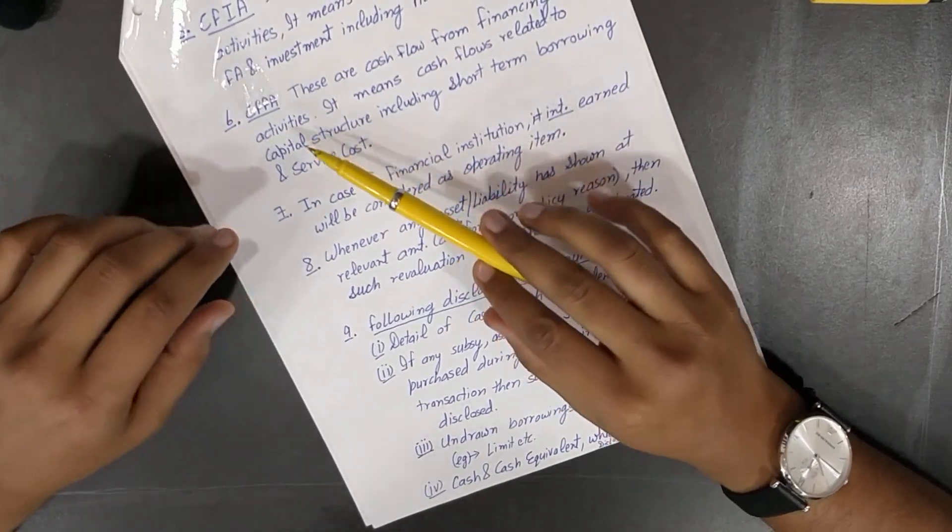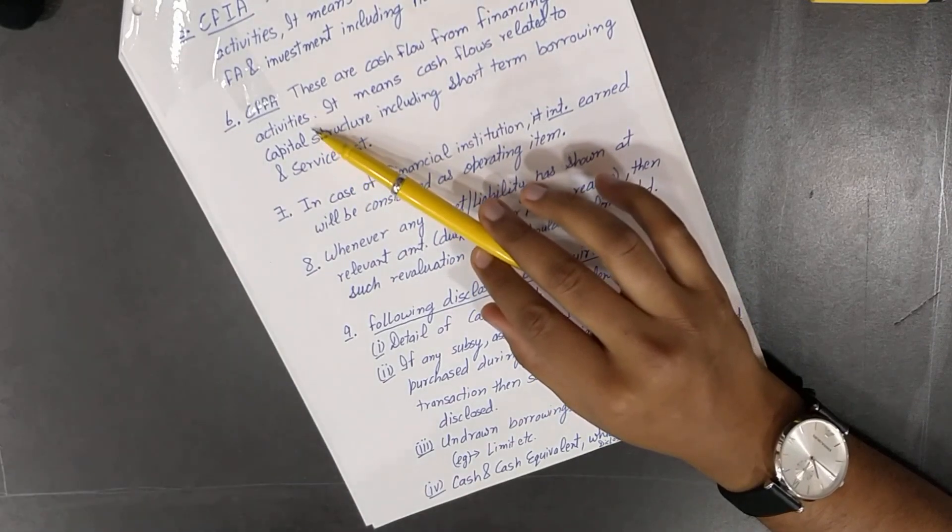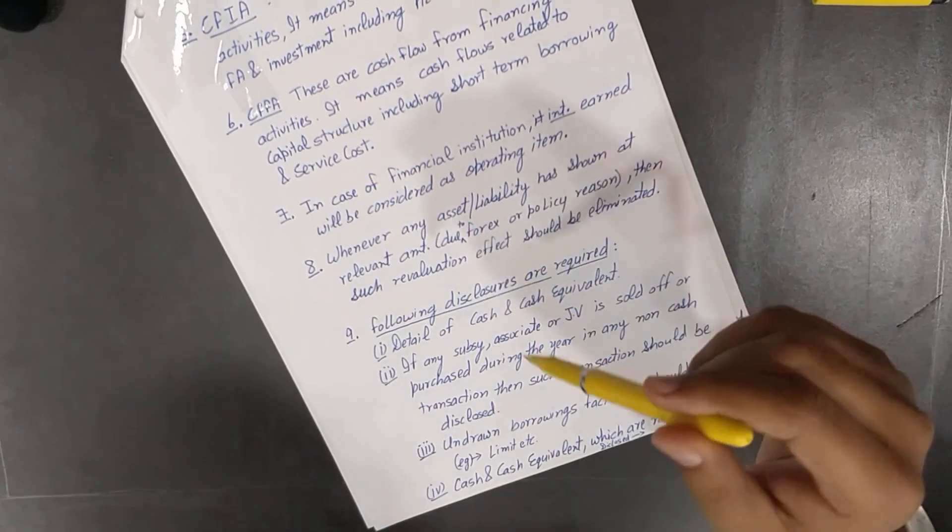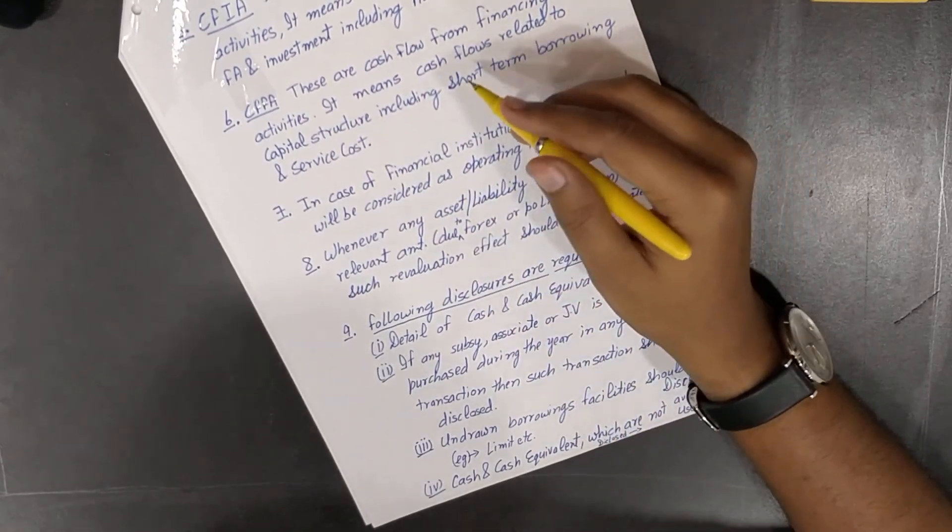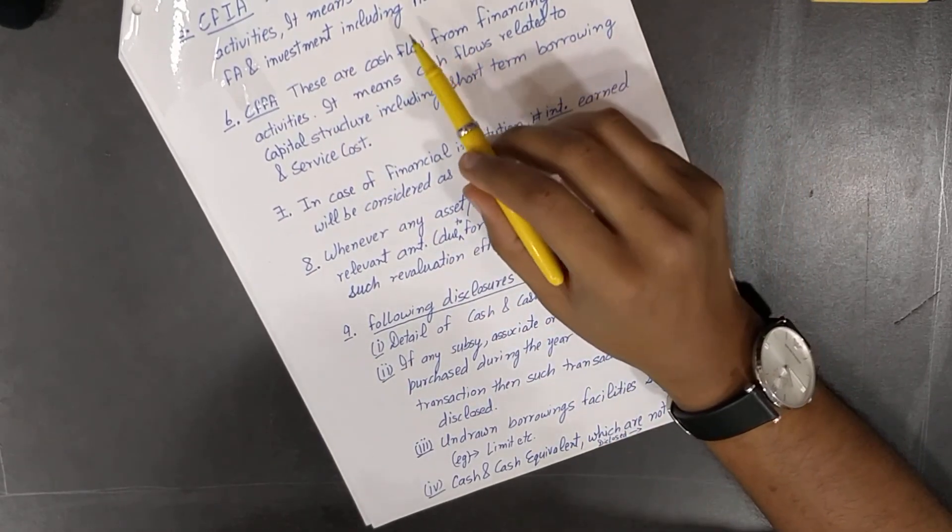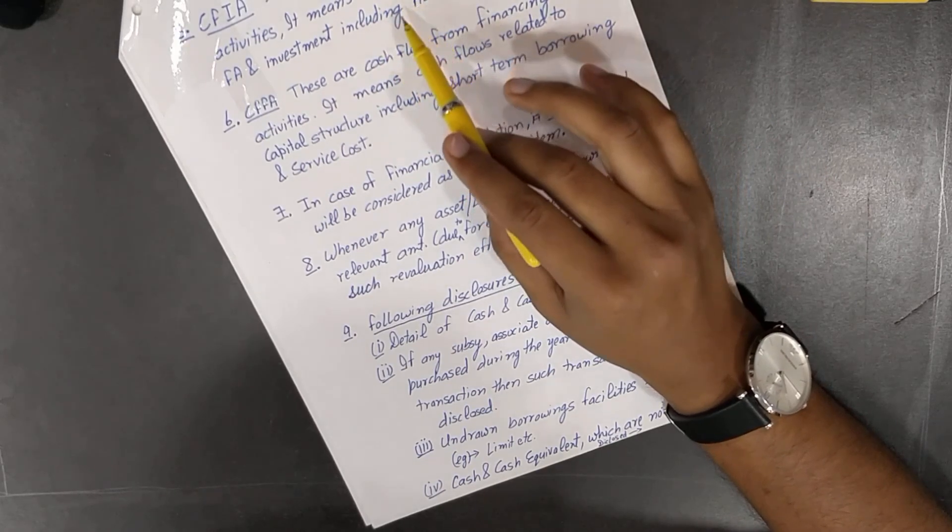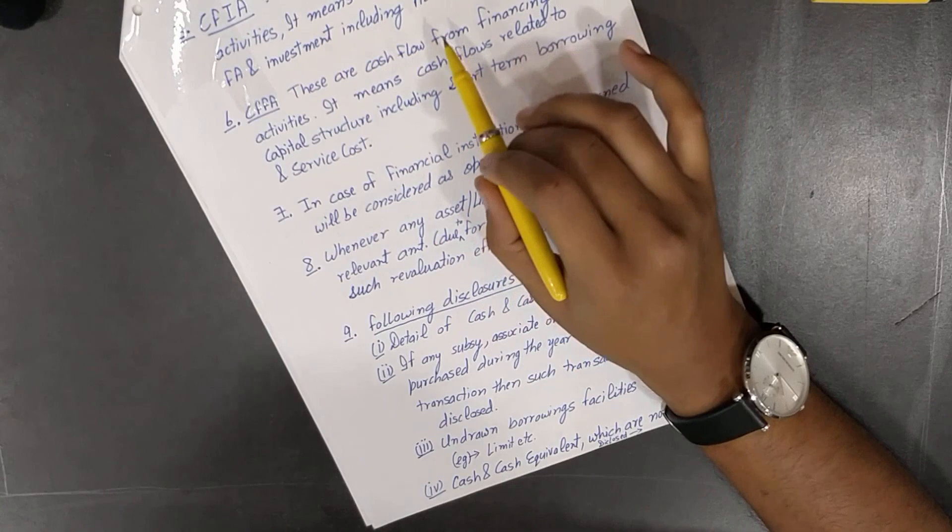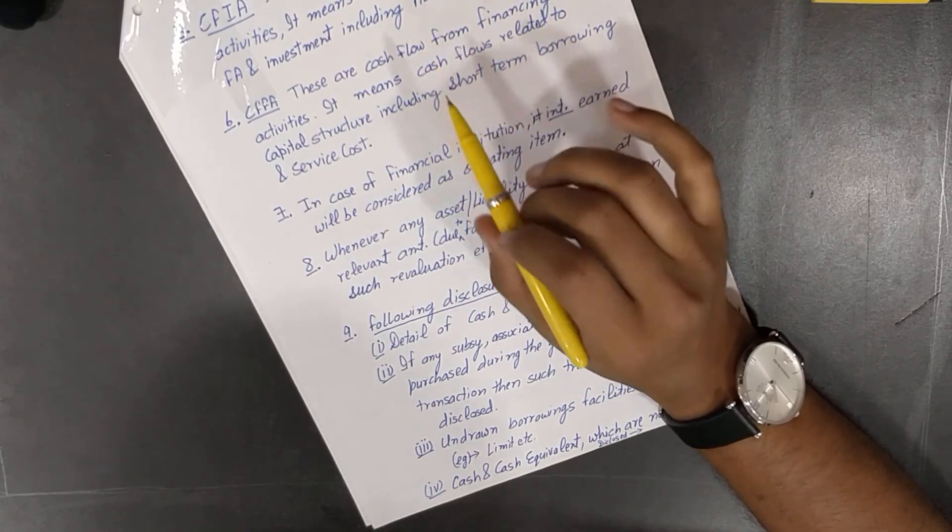Cash flow from financing activities means those persons or we can say the provider of finance, any activity related to them. For example, dividend paid. Now dividend received will be in investing because we have invested in equity shares so we got received the dividend. It is very much important to differentiate in these two terms.